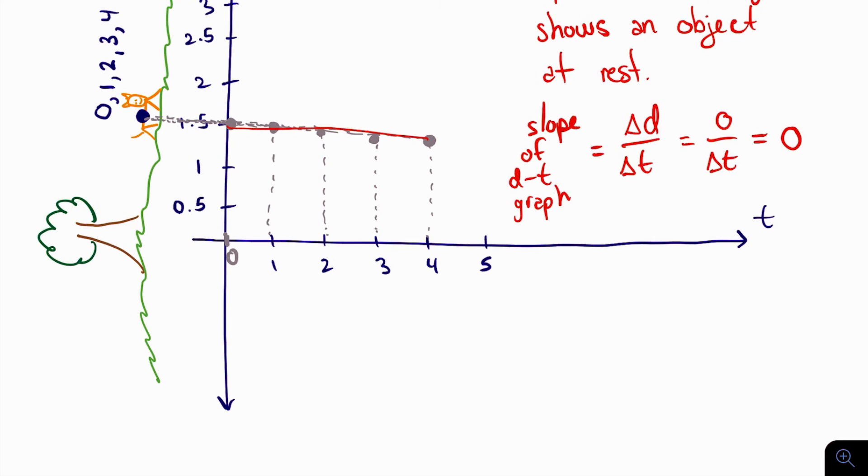And given that the slope of the position time graph is velocity, this means that the velocity of the cheetah is zero meters per second, which makes sense because it's not moving and the cheetah is at rest.